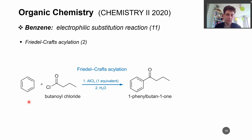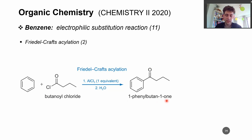This is the reaction scheme for the Friedel-Crafts acylation. You're using, for example, a butanoyl chloride. This gets activated by a strong Lewis acid. Then you work up with water and selectively you end up with 1-phenyl-butan-1-one.